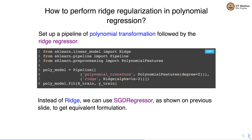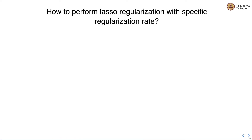Instead of Ridge, we can also use SGDRegressor as shown previously to get an equivalent formulation. Now let's understand how to perform Lasso regularization with a specific regularization rate.